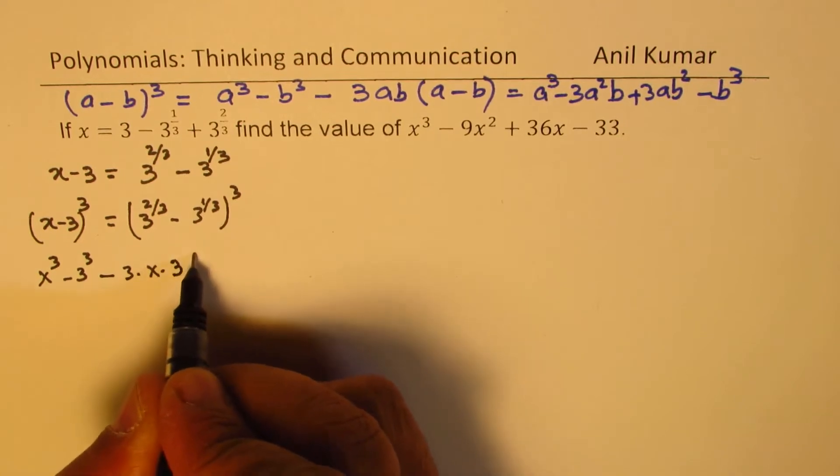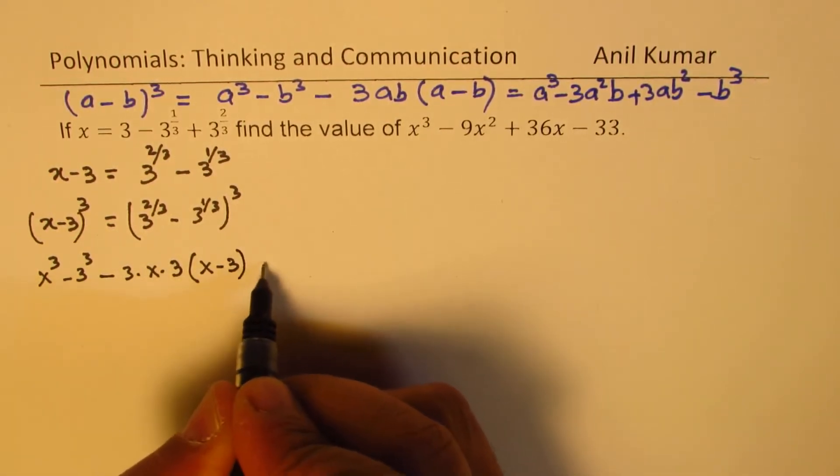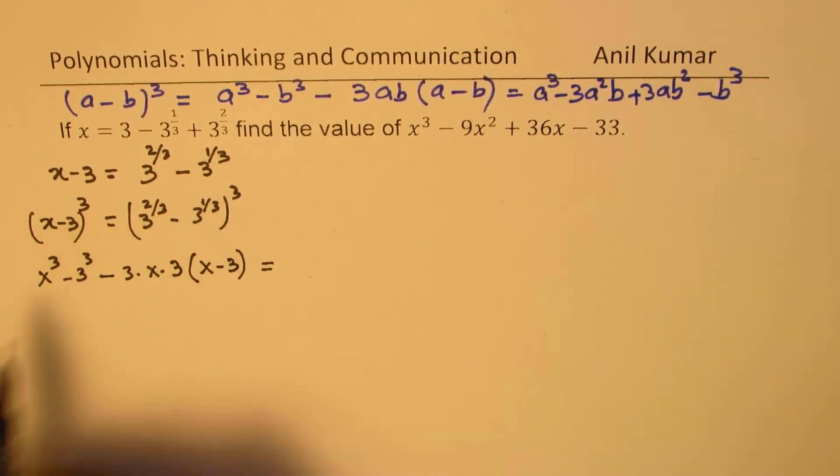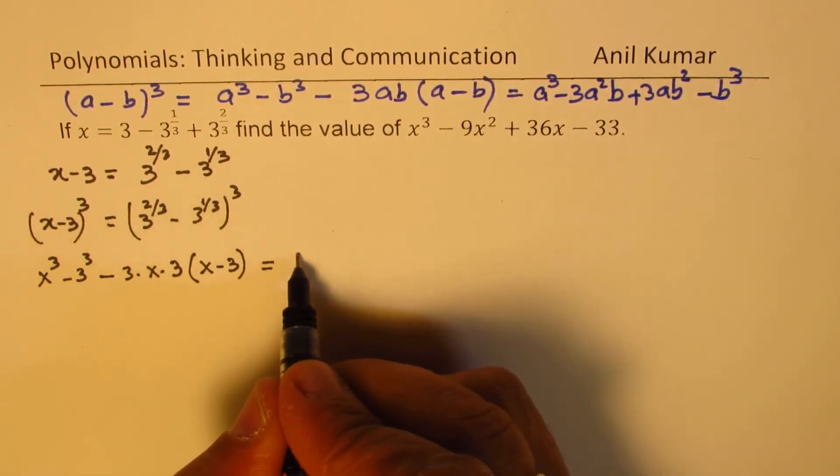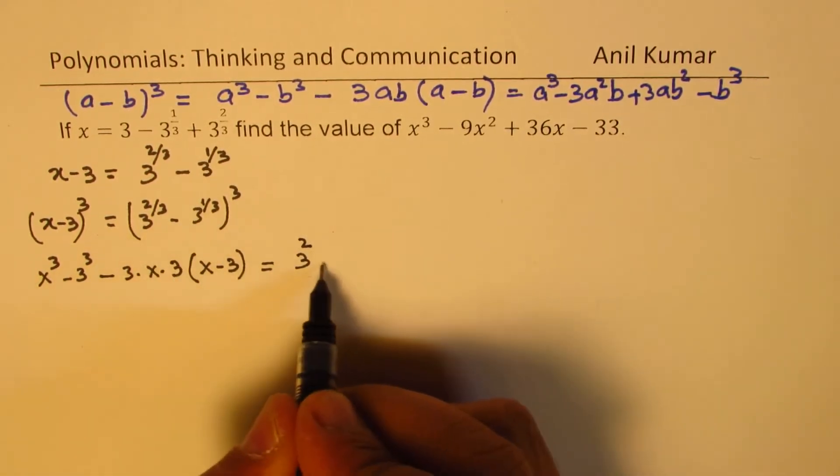Minus 3 times ab. So minus 3 times x times 3, that is ab, within bracket x minus 3 equals. Same thing on this side. So cube of this, when you cube this, you get 3 squared minus